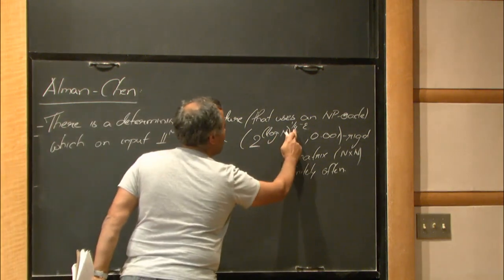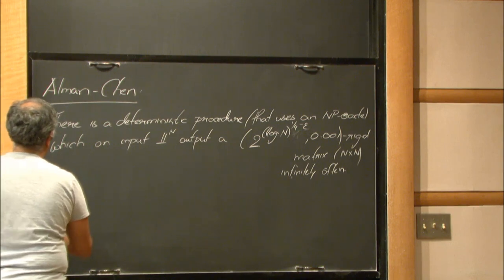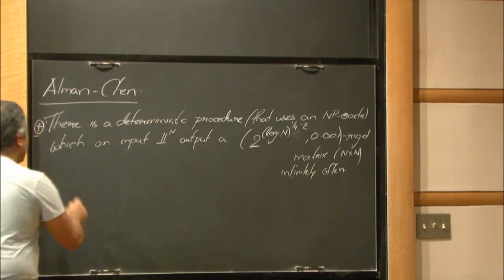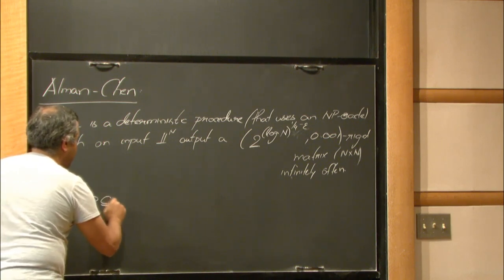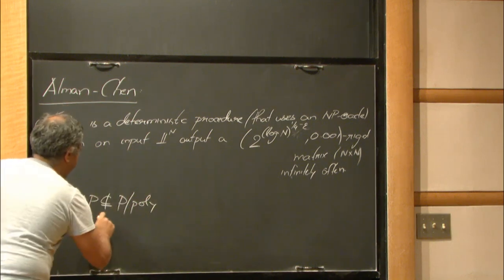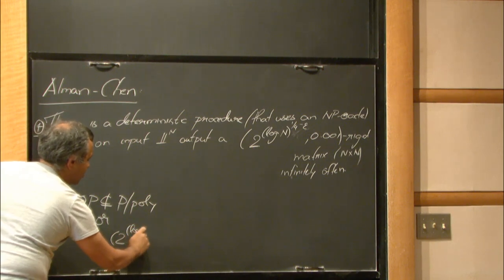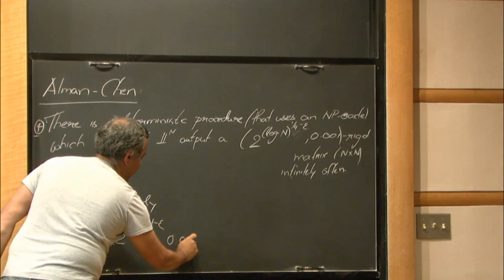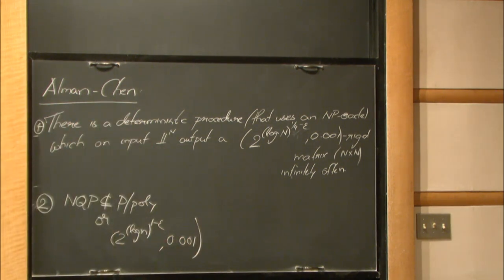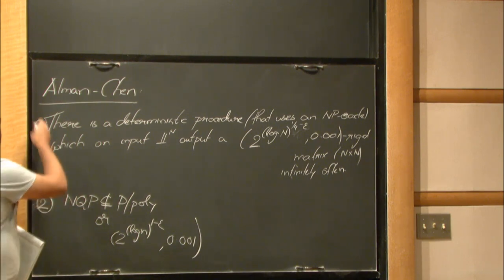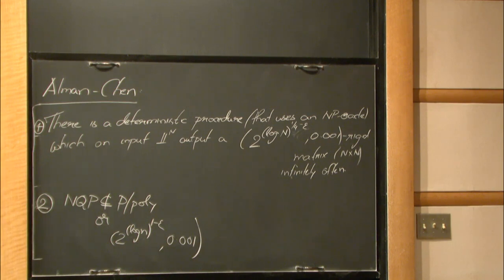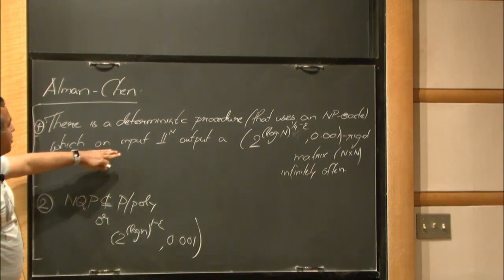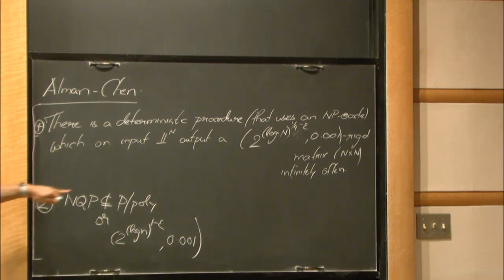They also asked whether the one-fourth exponent could be improved to one. Their second result gives a win-win: either non-deterministic quasi-polynomial time is not in P/poly, or there exist rigid matrices with rank 2 to the log n. This won the best paper or best student paper award at FOCS last year.